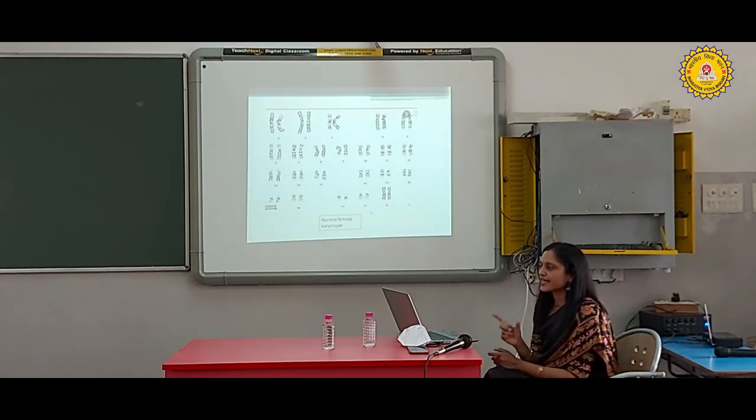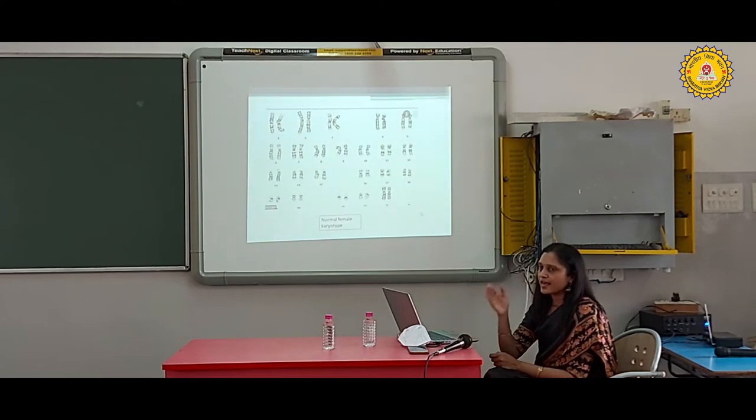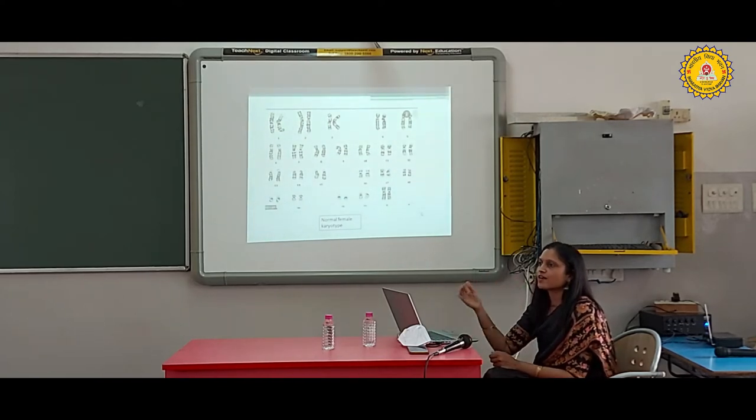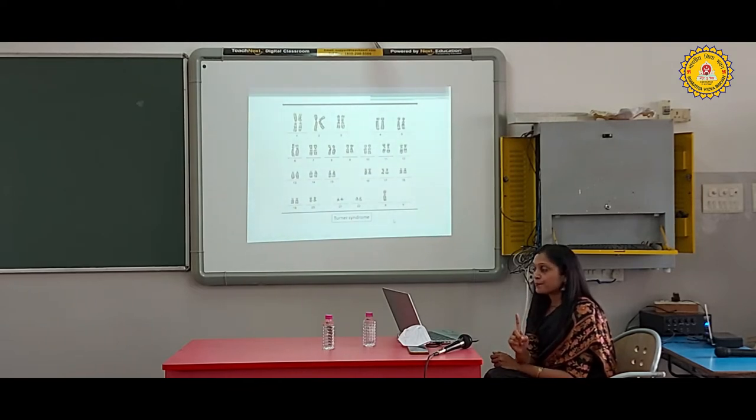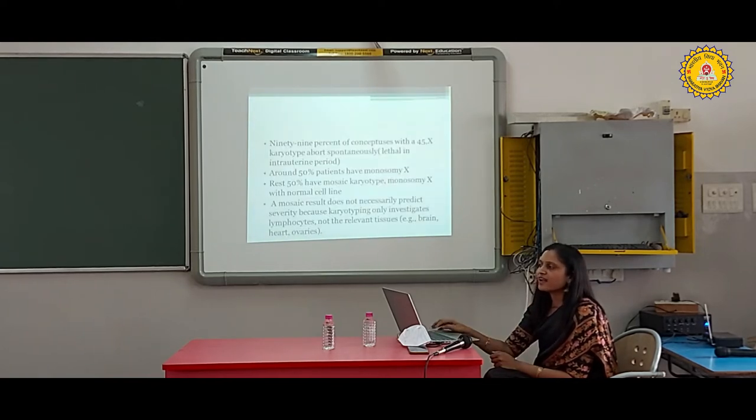Turner syndrome is diagnosed in females with partial or complete absence of one X chromosome. Normal females have 46 chromosomes - 23 pairs, one set from father and one from mother. If we get two X chromosomes, we are female. If one X and one Y, the child is male. 46XX is normal female karyotype. But in Turner syndrome, one X chromosome is missing, so they have 45 chromosomes total.